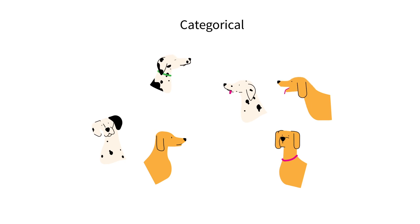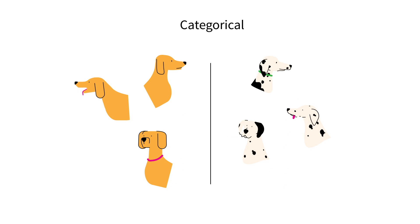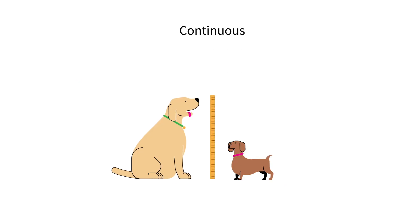They can be categorical, placing objects or participants into discrete groups, or continuous, placing an object or participant somewhere on a scale according to a specific attribute.